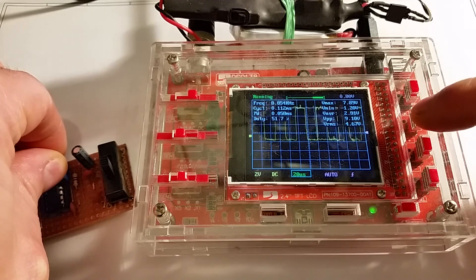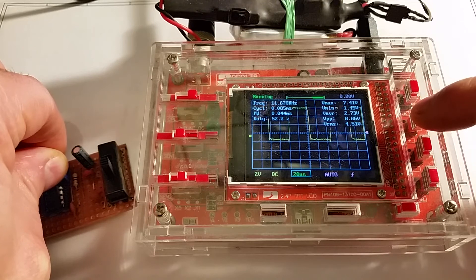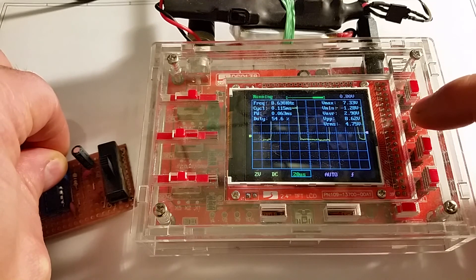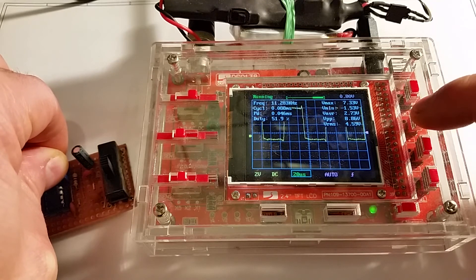It keeps a good square wave. It distorts slightly at the top range, but some of that could be the sampling rate of the oscilloscope.